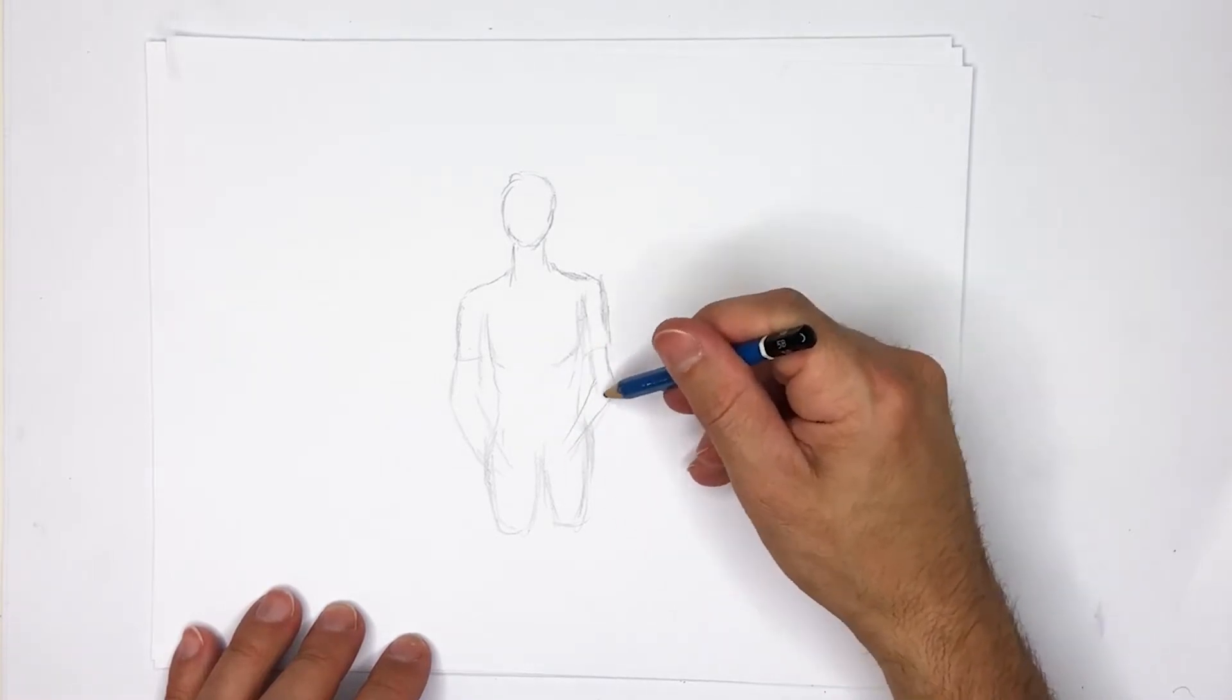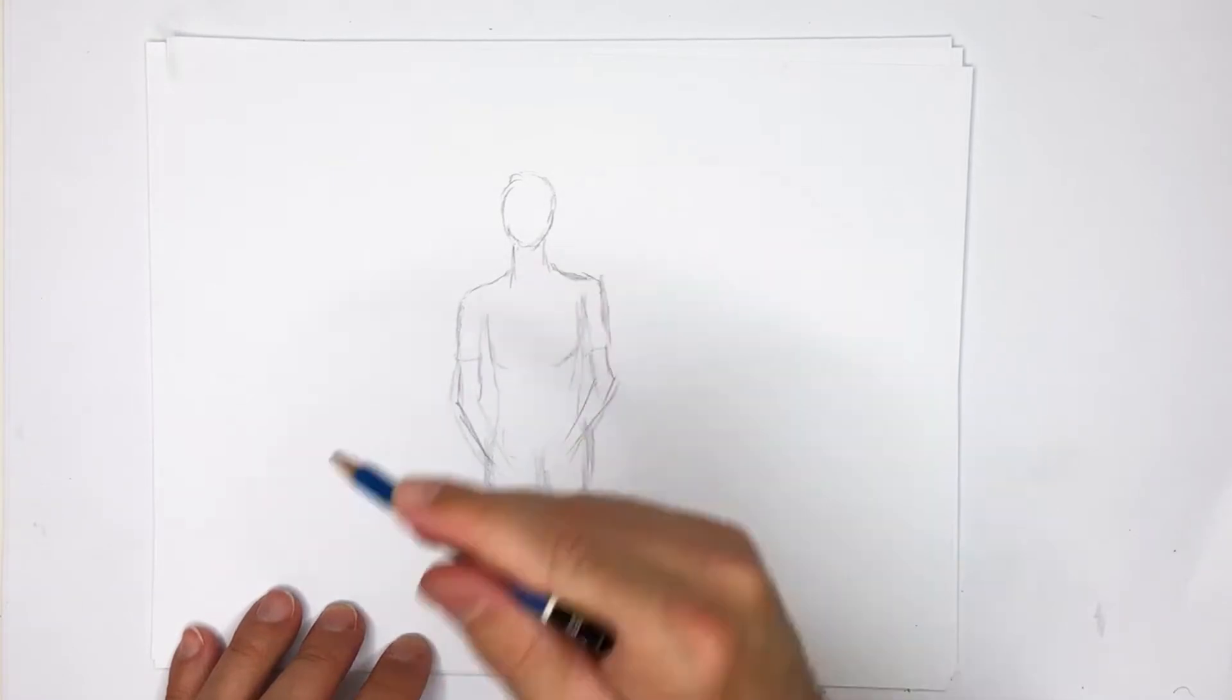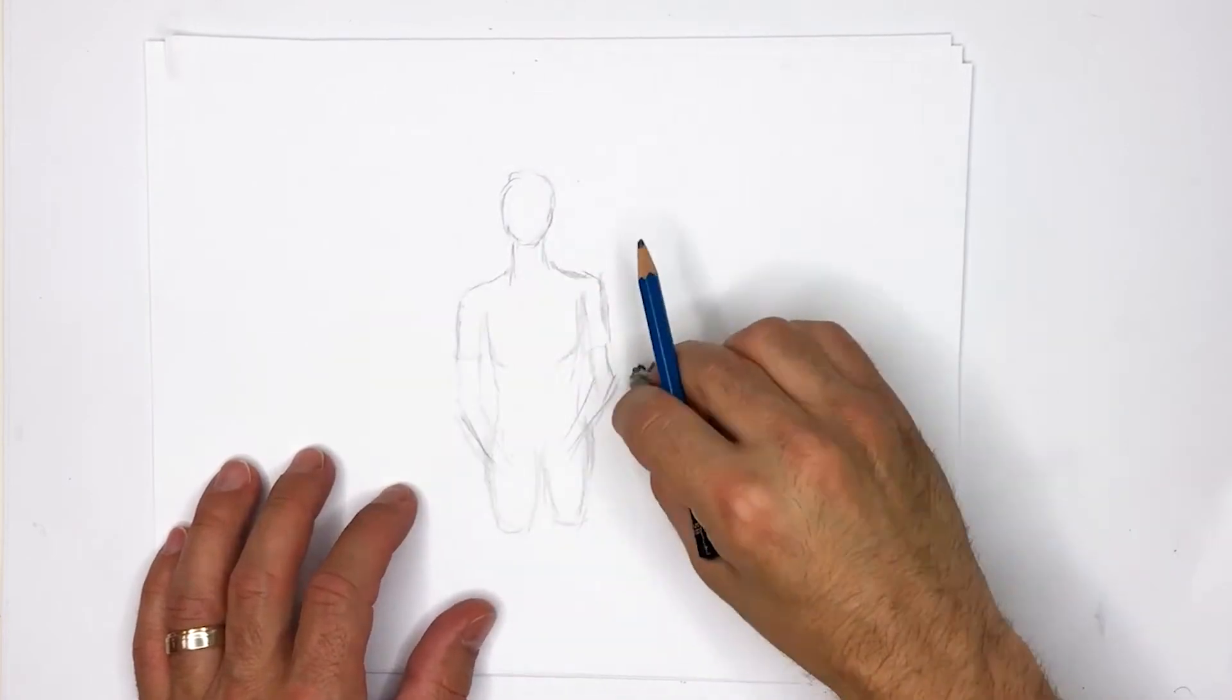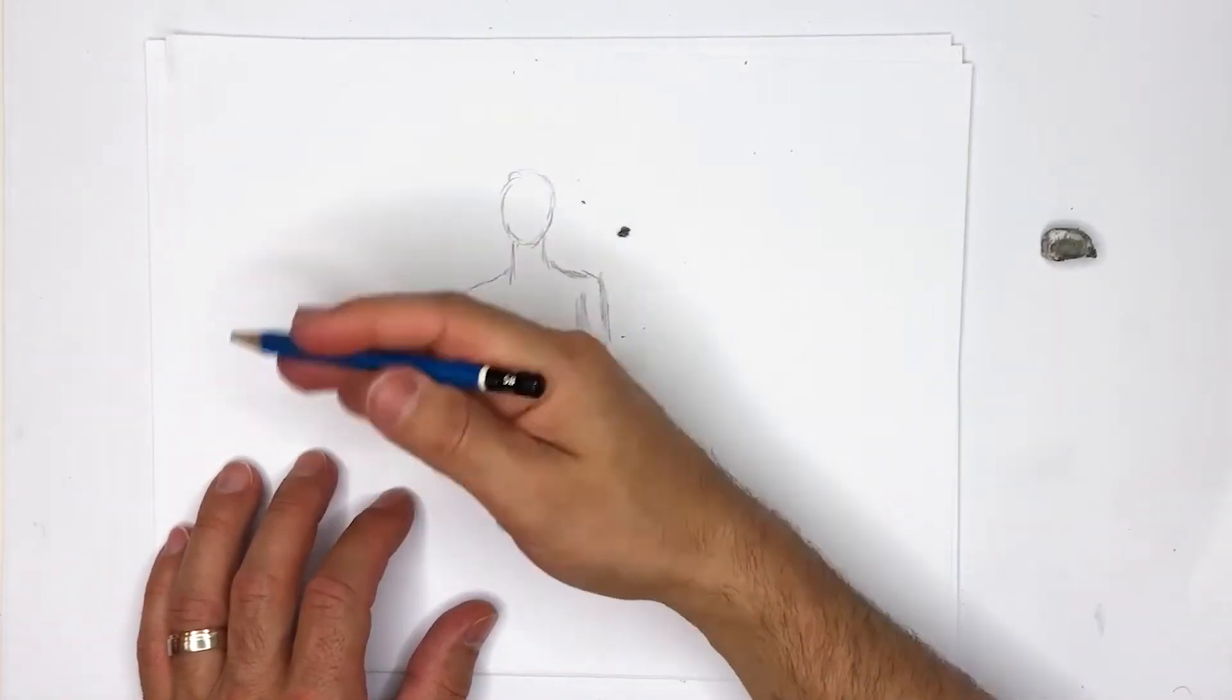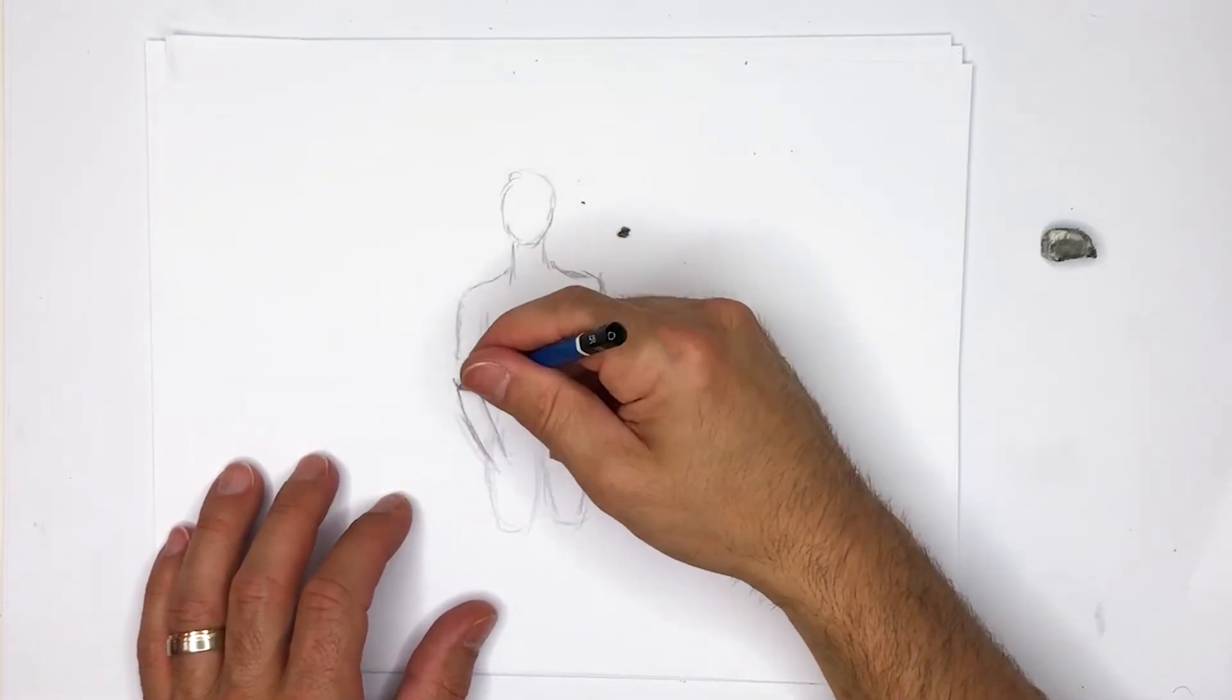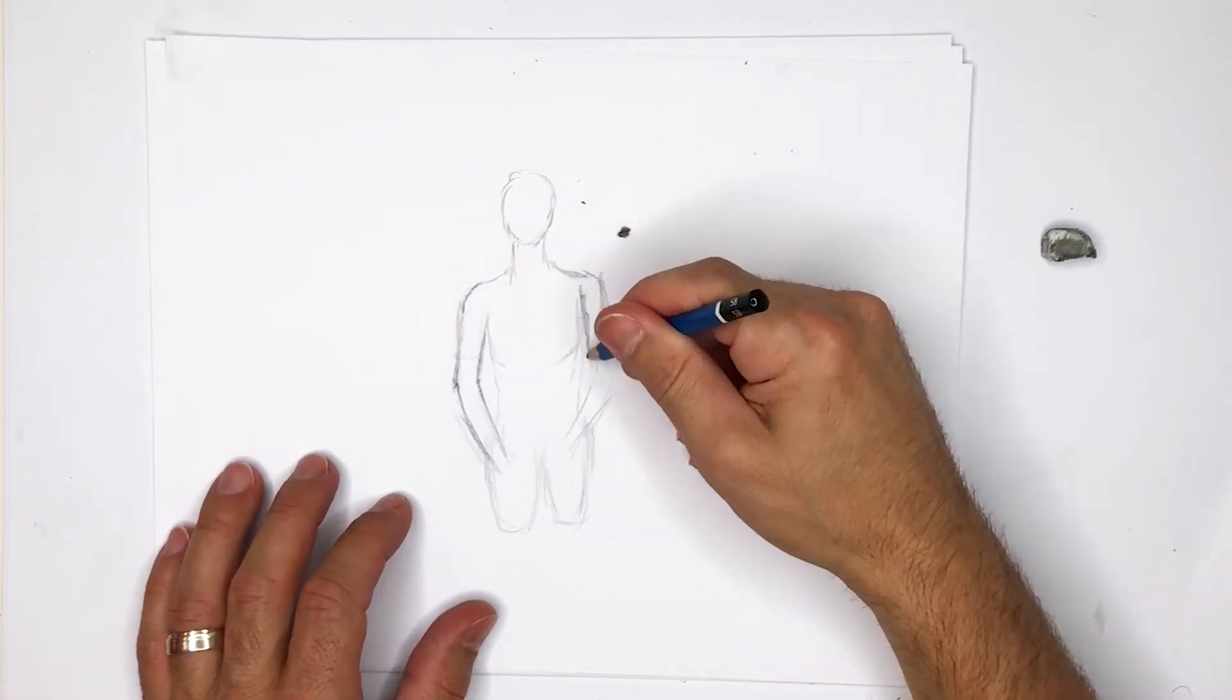Of course you can always clean things up if you feel things are a little off or not quite looking right. I think that the elbows are a little low so I just want to maybe clean that up over here, so we'll do that over here as well.